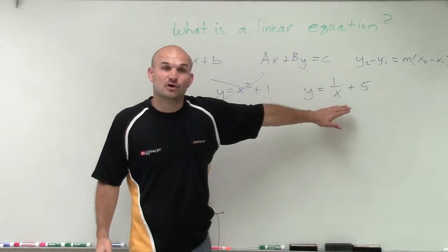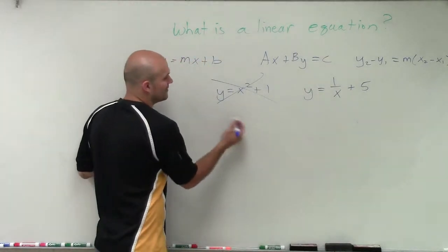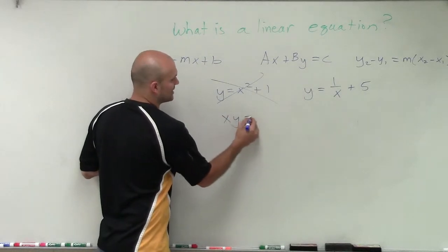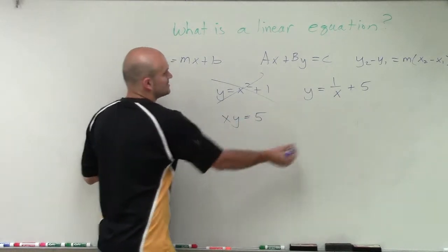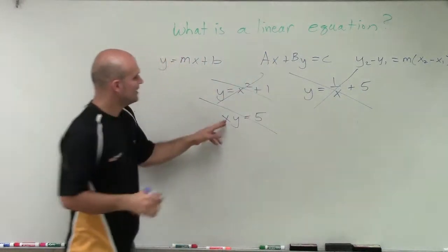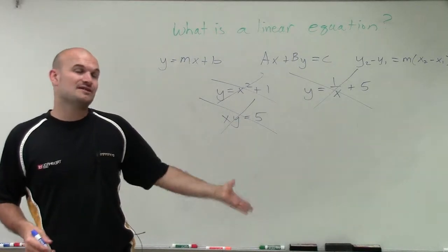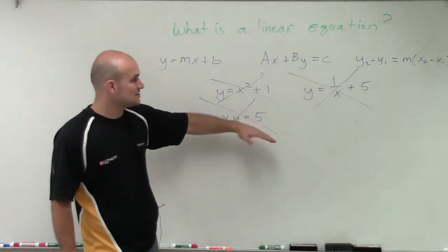We cannot have a variable in the denominator. And lastly, we also cannot have variables that are being multiplied by each other. So that's not a linear equation. Nor can you have something like x times y equals 5, because when solving for one of those variables, you're going to have to divide. So you can't have variables multiplied by each other.